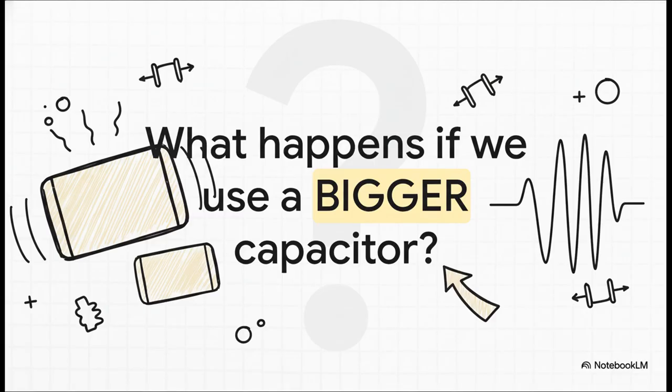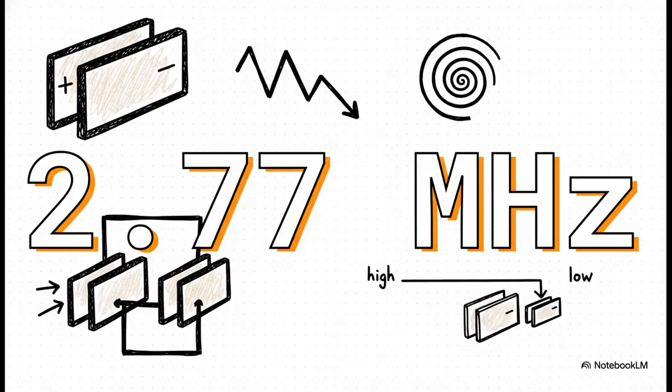So if taking the capacitor away lets the frequency just run wild, what do you think happens if we do the opposite? Let's try putting in a bigger capacitor. One that has even more capacitance. And yep, just as you'd probably guess, the frequency drops even lower, down to 2.77 megahertz. So the rule is pretty clear. The more capacitance you add, the lower the frequency gets. But why?